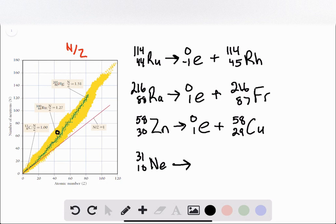And finally, if we look at neon, neon's neutron to proton ratio is much too high, which means that we're going to emit a beta particle and convert our 31 neon into 31 sodium.